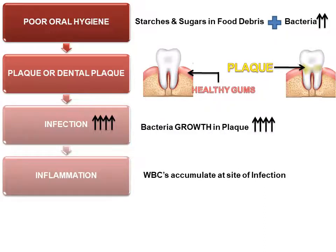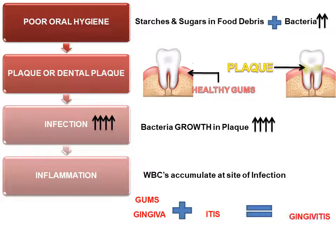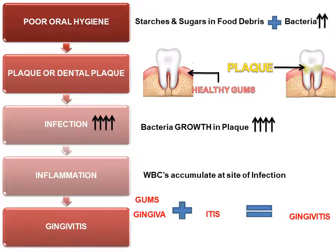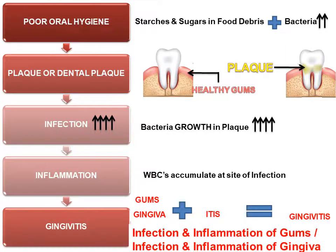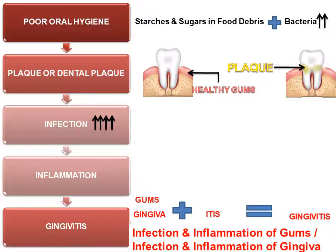What will happen first — infection or inflammation? Infection. If infection happens, inflammation will definitely follow. Inflammation is denoted as 'itis.' This inflammation is in the gums, which are also called gingiva. So gingiva plus itis equals gingivitis. Gingivitis is infection and inflammation of the gums.